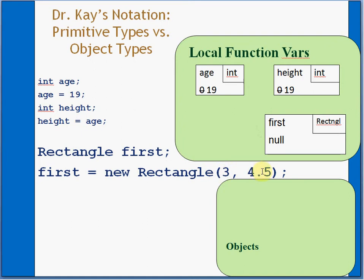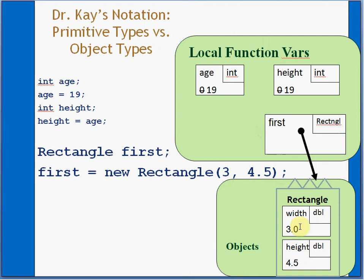First gets new rectangle 3, 4.5. Well, let's pretend that there's some sort of a constructor that takes the height and width of the rectangle. So evaluate the right-hand side, put the answer in the left. We evaluate the right-hand side, we get a new rectangle, put the answer in the left. So first is an arrow that points to that new rectangle.